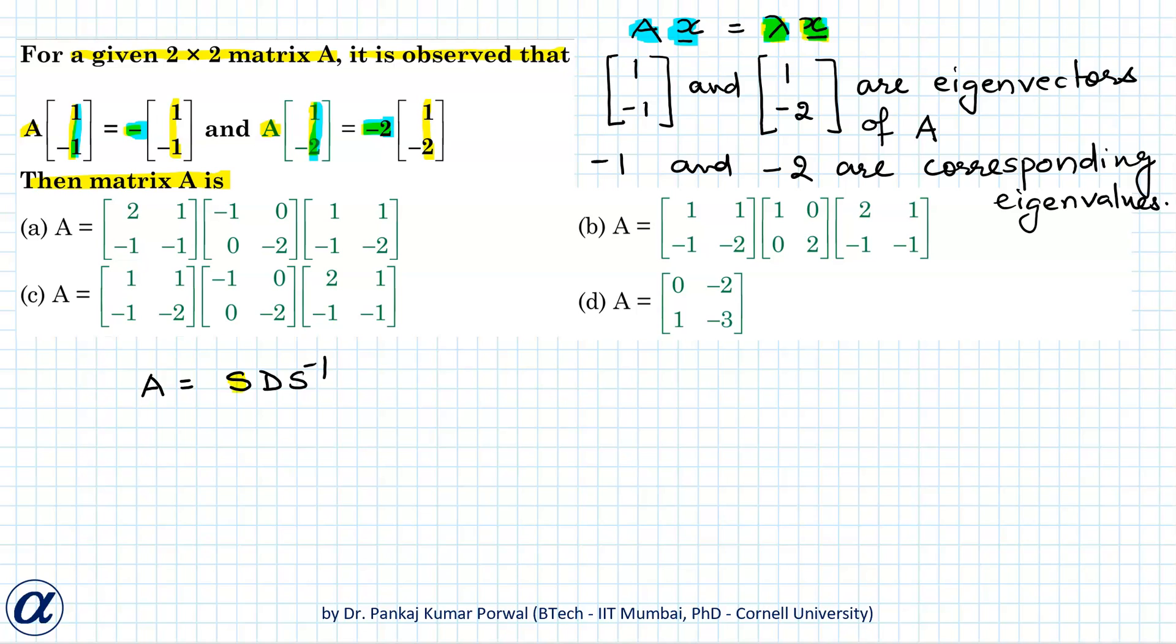Here S is the matrix with eigenvectors of A as columns and D is the diagonal matrix consisting of eigenvalues of the matrix. And the positions of eigenvectors and eigenvalues in S and D correspond to each other.